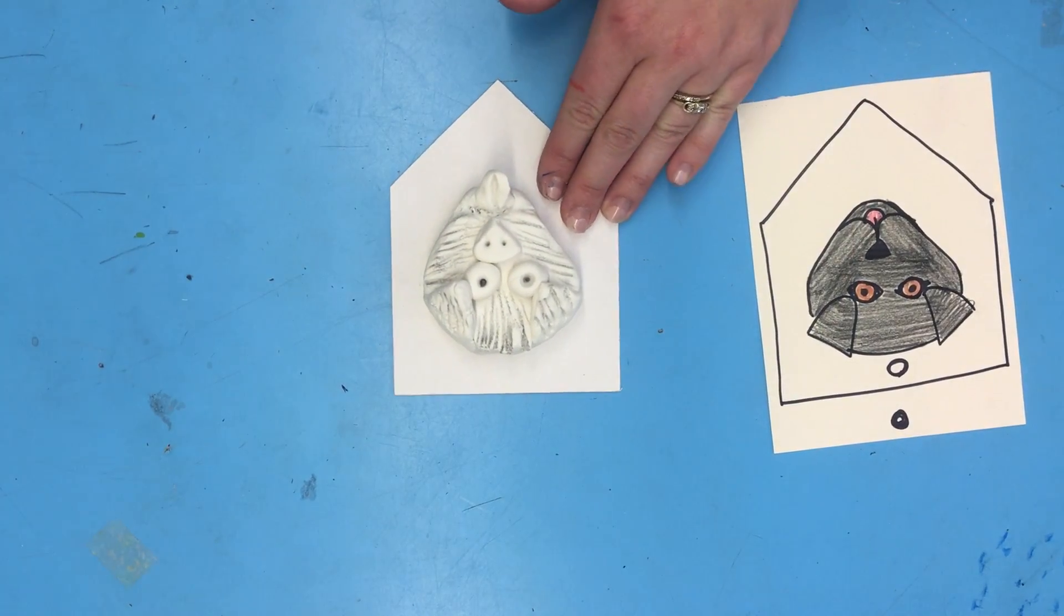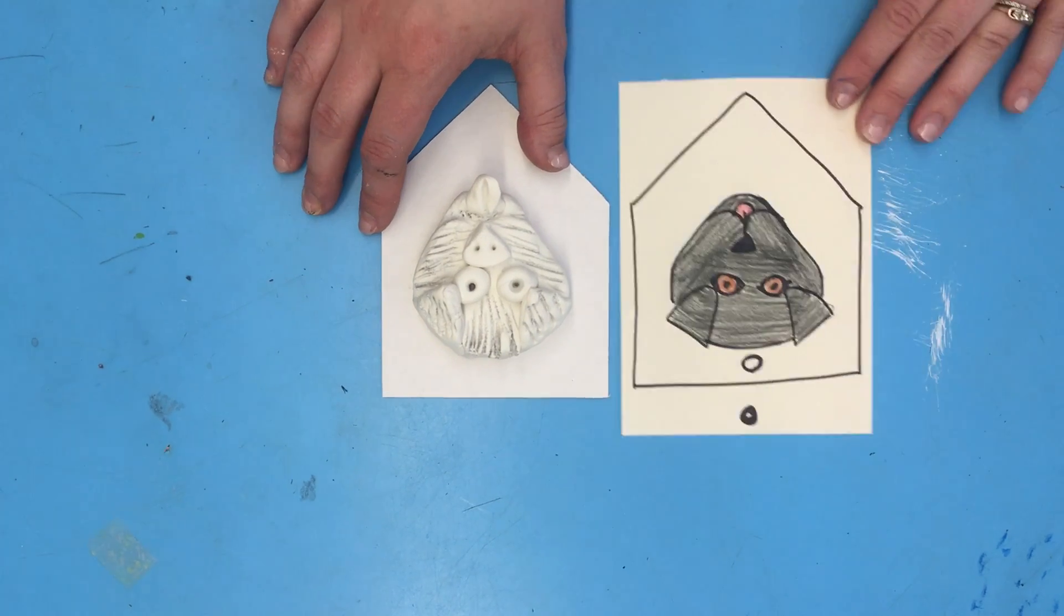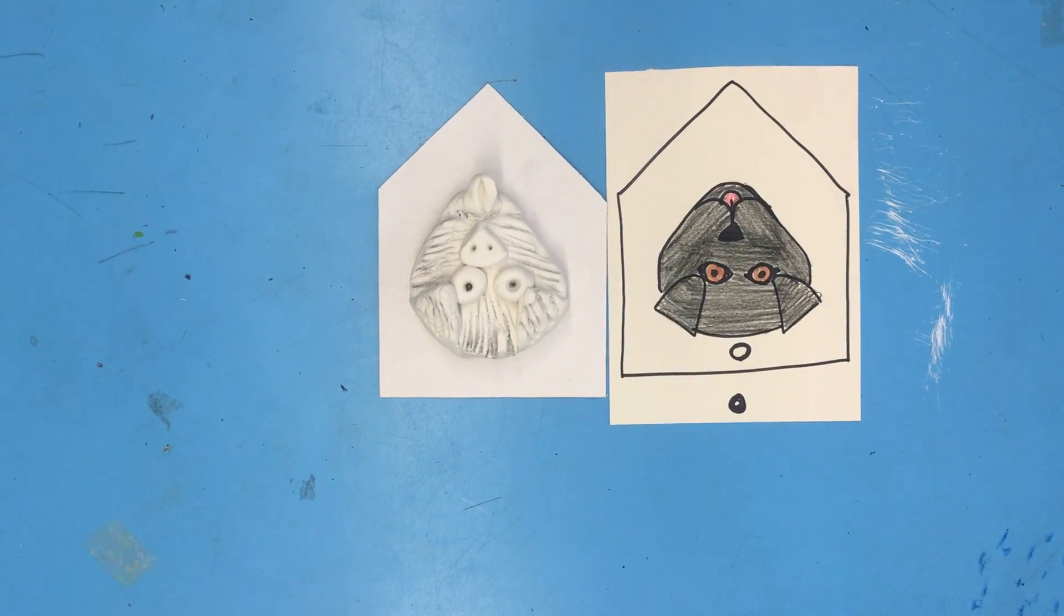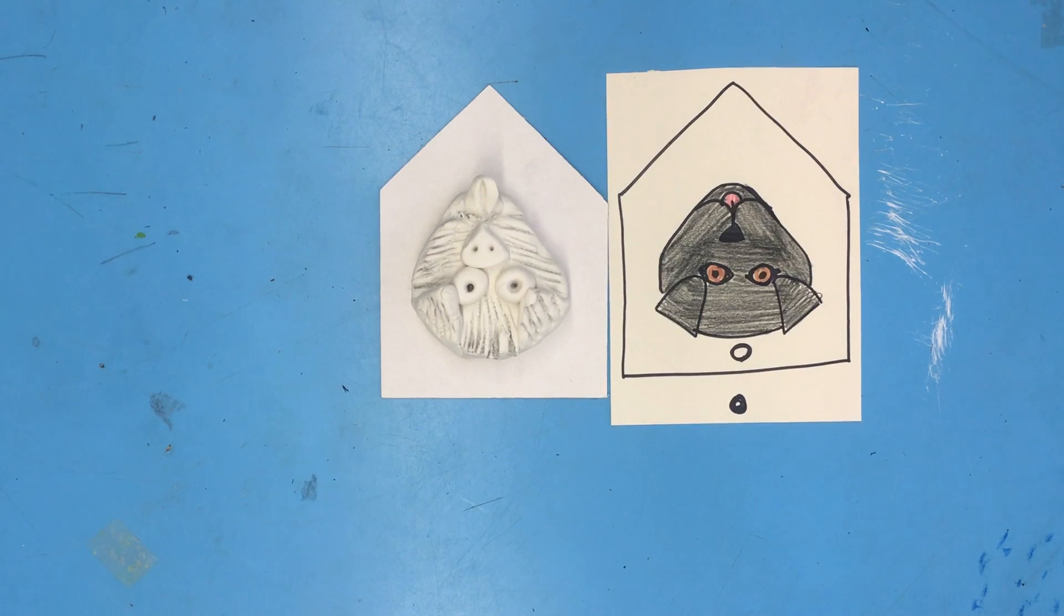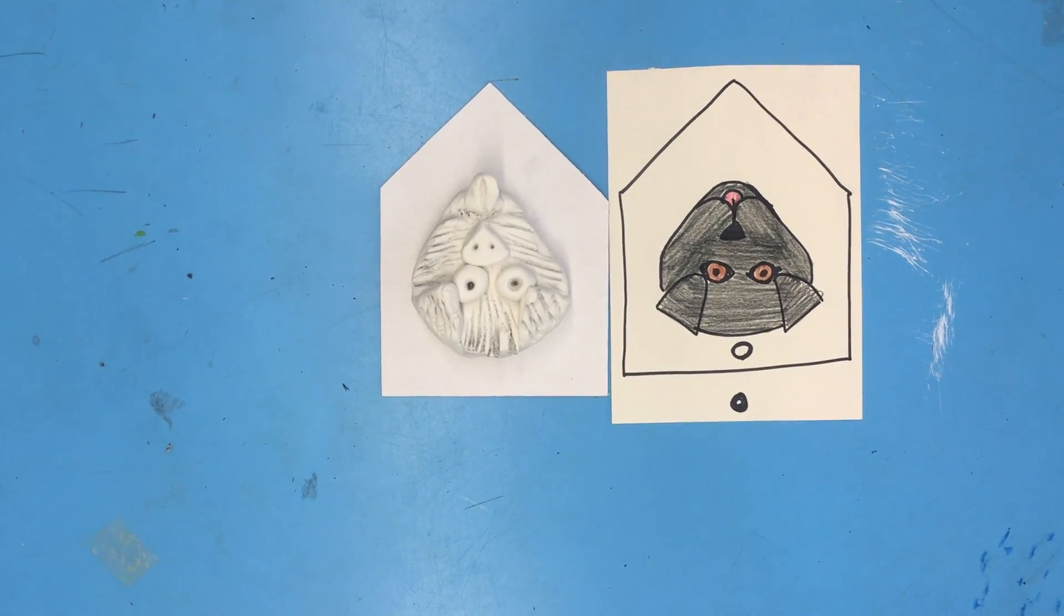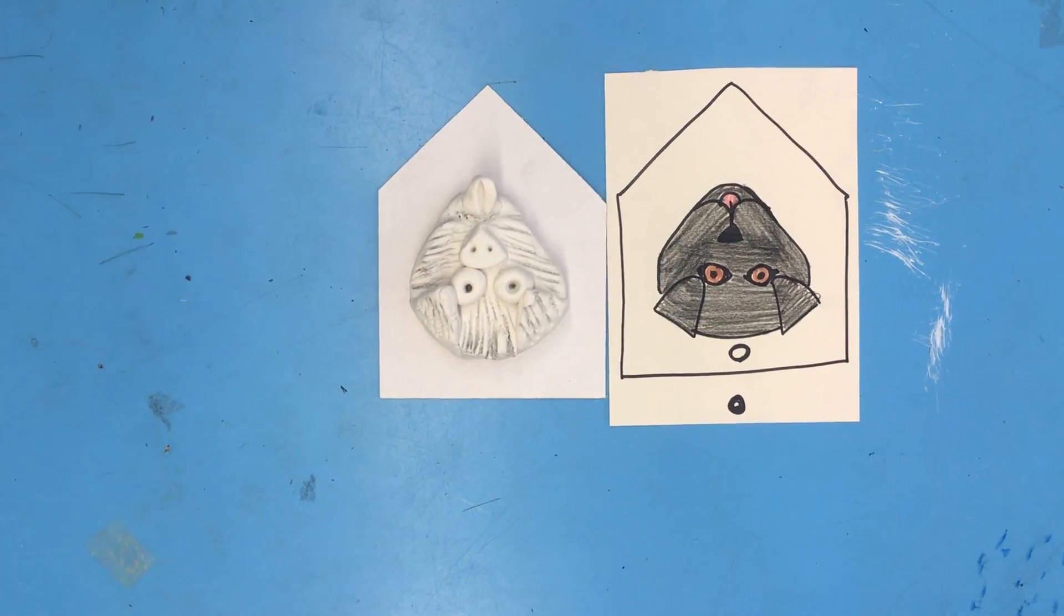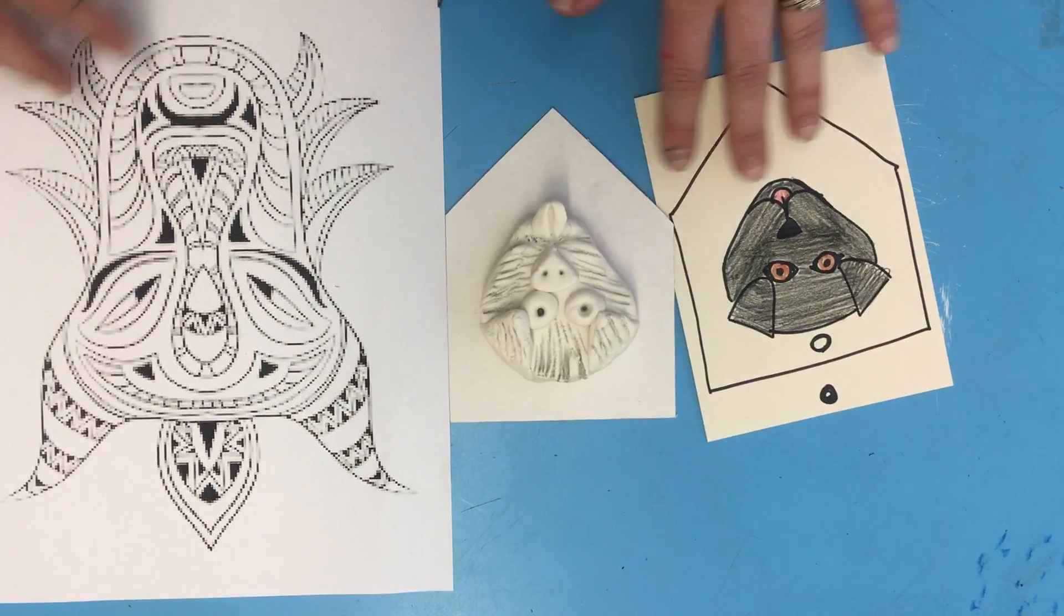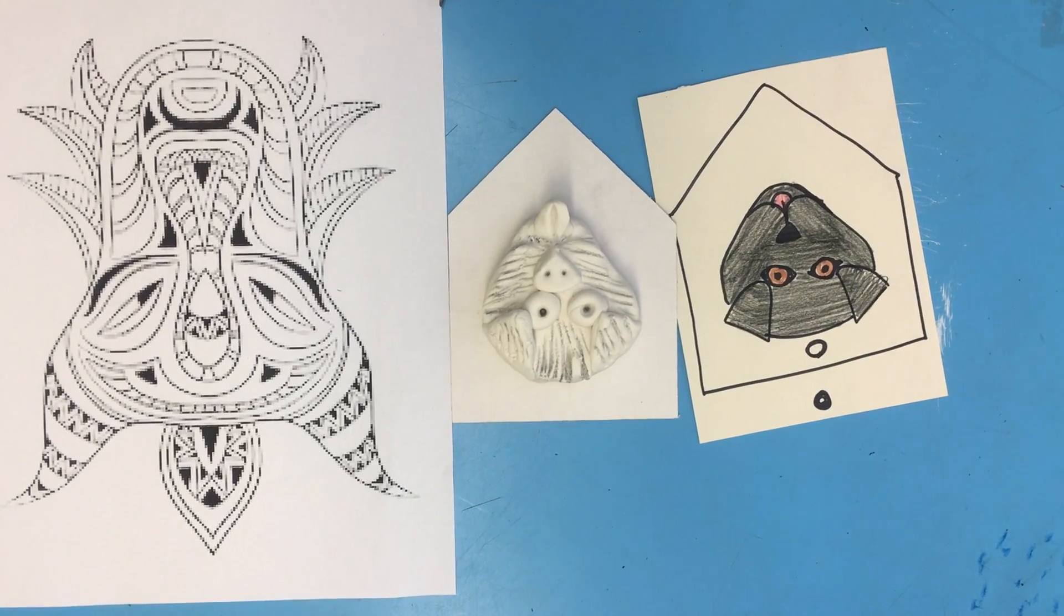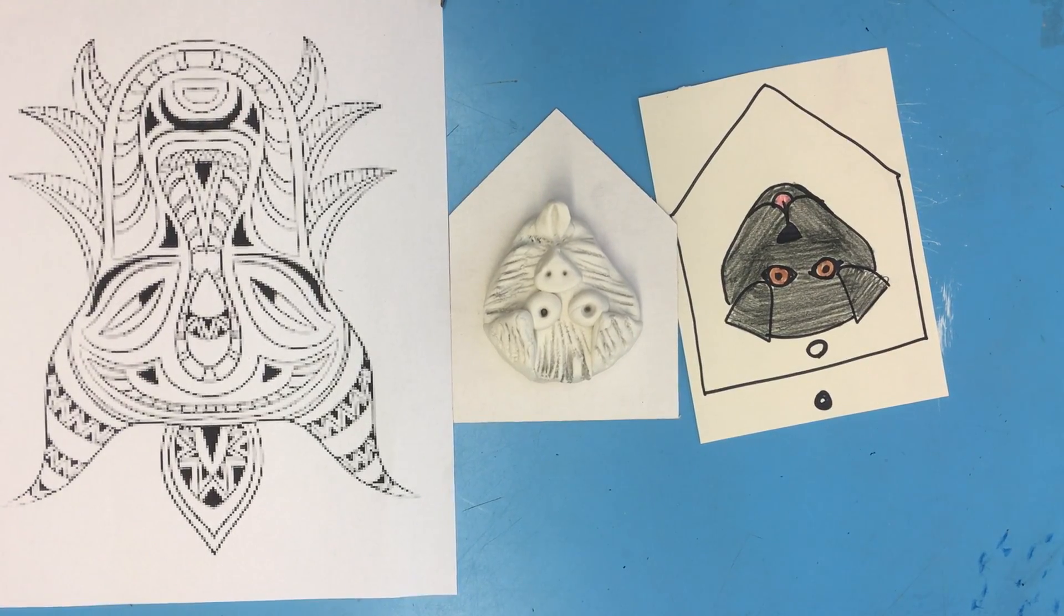When you're all finished sculpting your design of your animal, you're going to put it on the back counter. And you're going to pull out either your totem pole or your African mask coloring page. And you're going to color neatly and completely until the end of class.